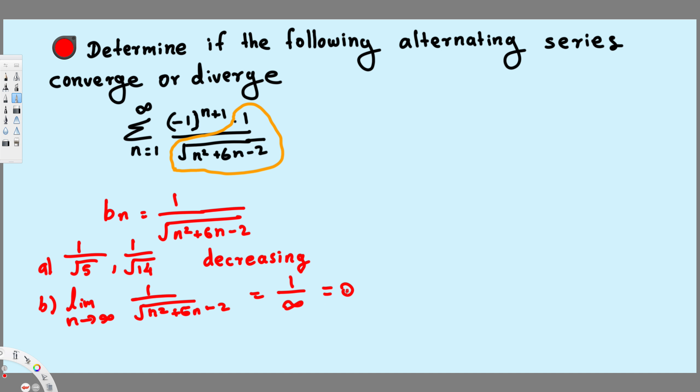We know that it's going to be 1 over infinity, that's definitely equal to 0. So this is decreasing and the limit is equal to 0. This satisfies both conditions, therefore this is a convergent series.